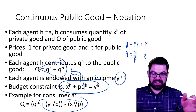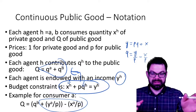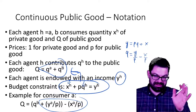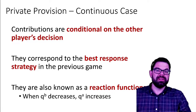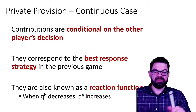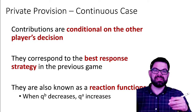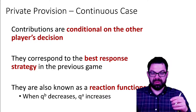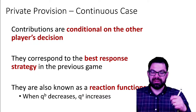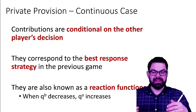Clearly, the contribution of person A to the public good will also depend on how much the other person is contributing to that public good. So what we're ultimately looking at is each player's best response to the contribution of the other player. These best responses are described by so-called reaction functions. The higher the contribution of one player, the lower is the optimal contribution of the other player — and that should be intuitive.